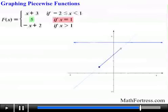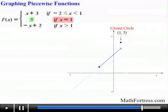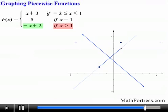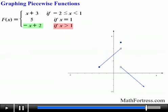Now graph the second function, the constant 5 — a horizontal line with y-intercept 5. The restriction x = 1 means only the point at x = 1 is visible, giving us the point (1, 5). Finally, graph -x + 2 — a line with slope -1 and y-intercept 2. The restriction x > 1 means we add an open circle at x = 1 and draw the line from that point onward. That's how this piecewise function looks.